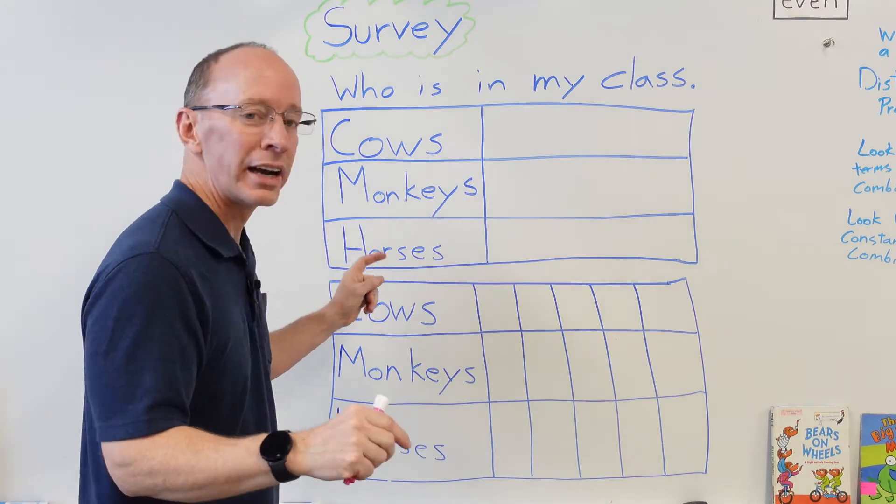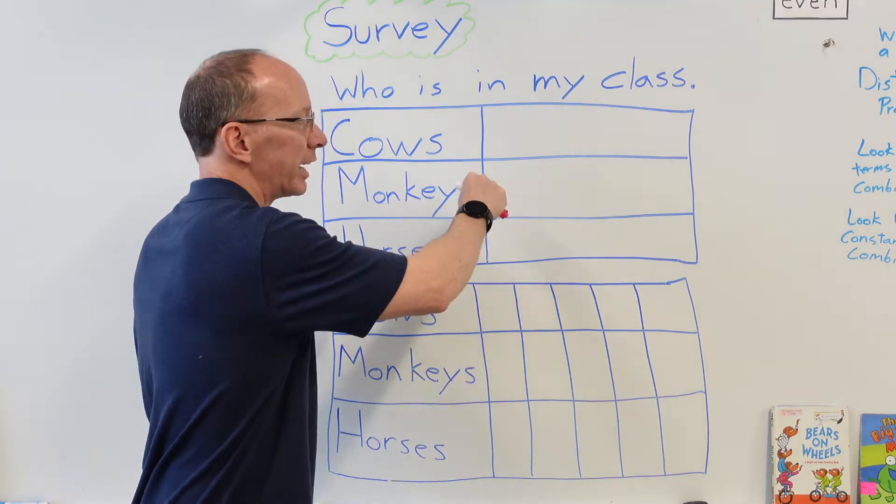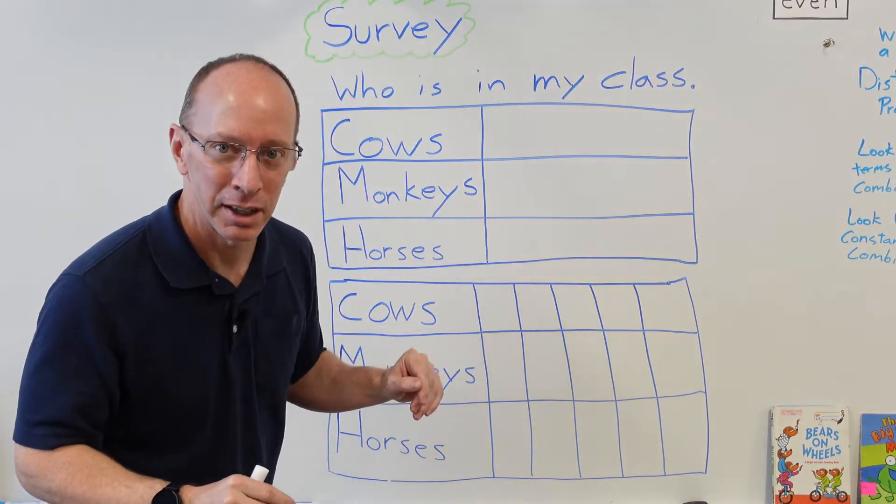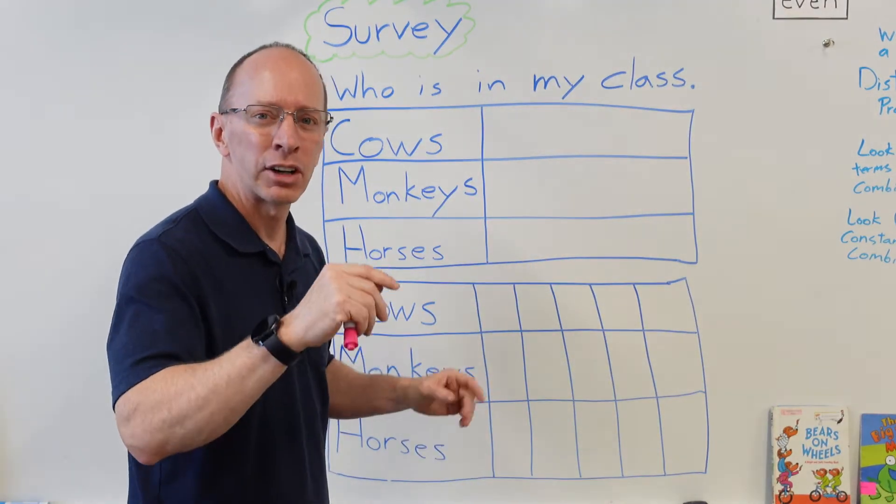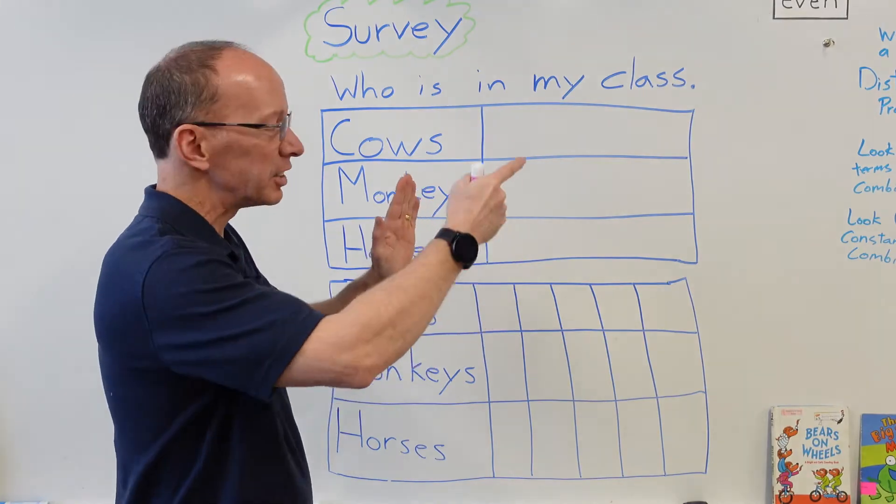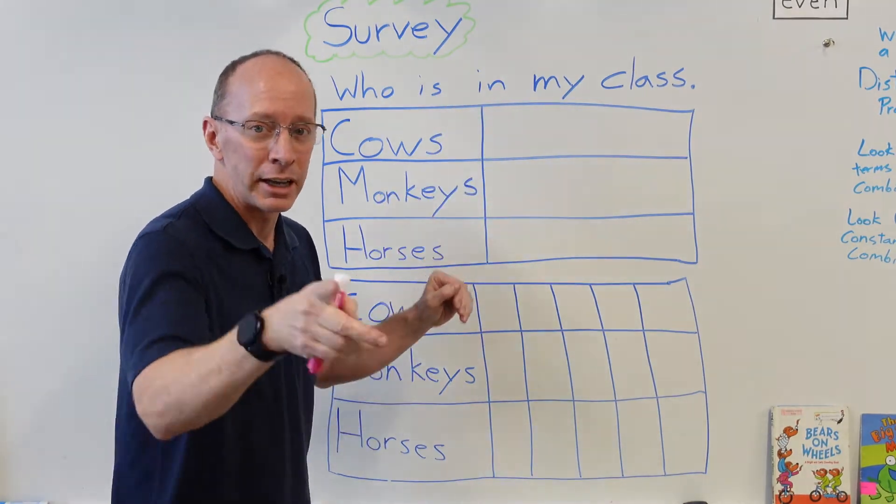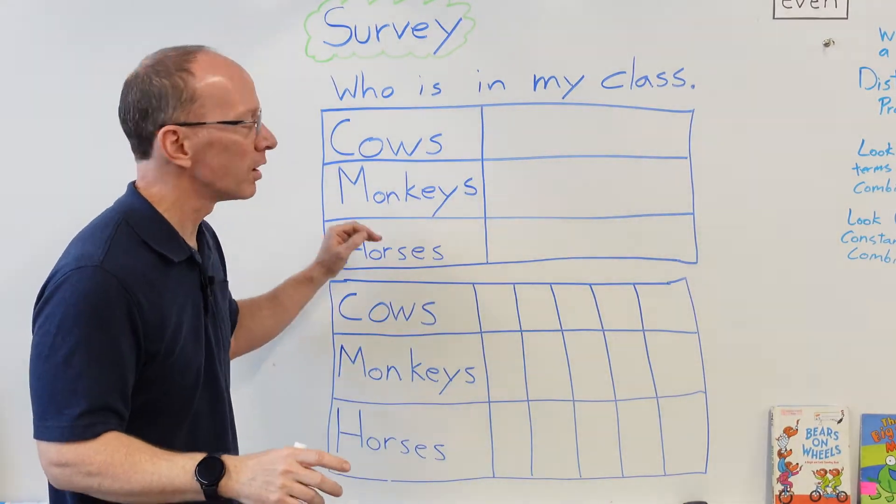Let's go ahead and ask who's in my classroom. When you hear a cow or a monkey or a horse, I want you to go ahead and put a tally mark in your results. Now remember, with tally marks, if you have a group of five, you kind of do that little slash there, and we'll get to that.